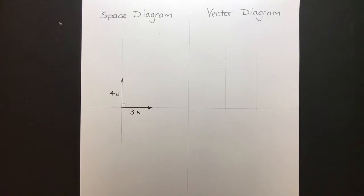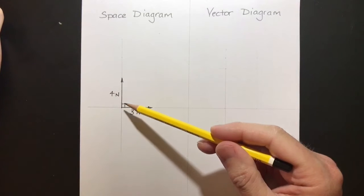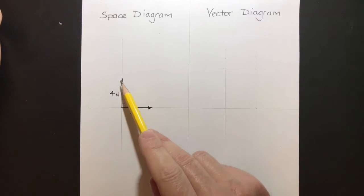OK, this is a short video to very quickly go through how to draw a vector diagram. As you can see, we've got our space diagram here. We've got two vectors in here. We've got a 3 Newton vector in that direction and 90 degrees round from that we've got a 4 Newton vector in that direction.